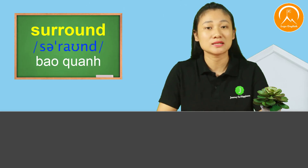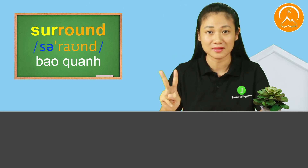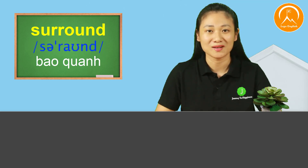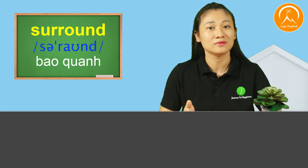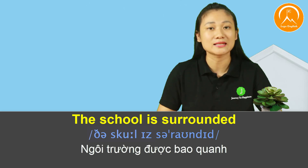Pay attention so you can learn new vocabulary most effectively. The next word is the verb meaning 'to surround': 'surround.' Again. Surround. Note that the stress falls on the second syllable: 'round.' So the first syllable is unstressed: surround. In the lesson it appears in the passive form — 'the school is surrounded' — using the past participle form 'surrounded.' Again. Surrounded. The full sentence is: The school is surrounded by mountains and green fields.